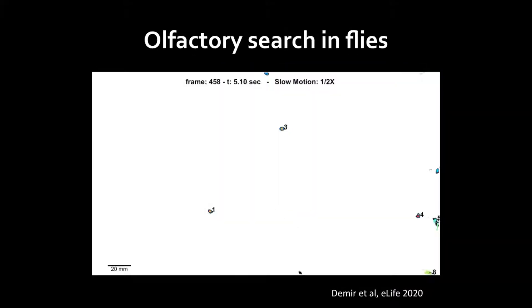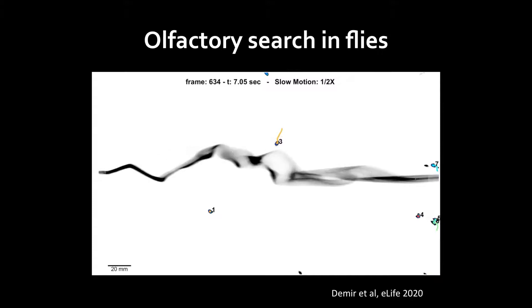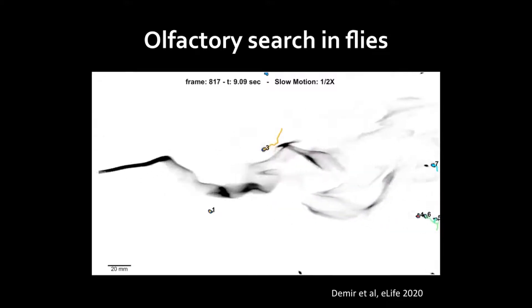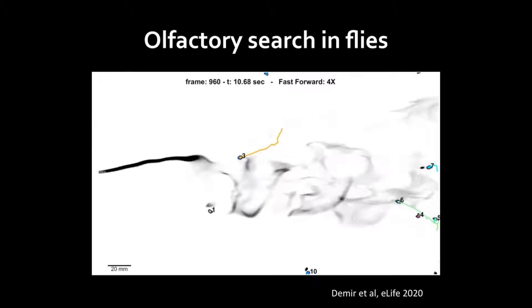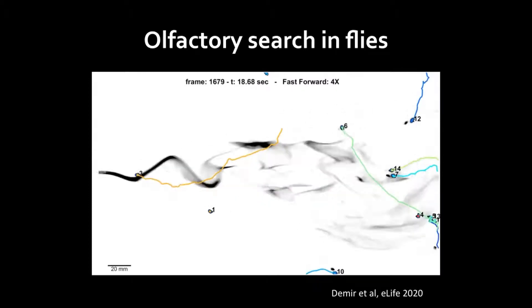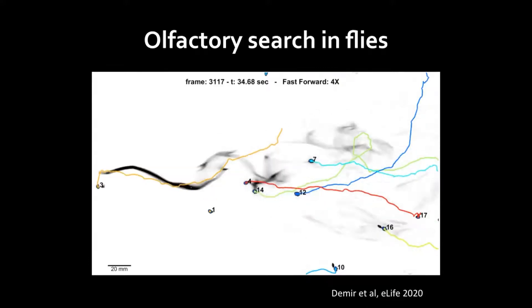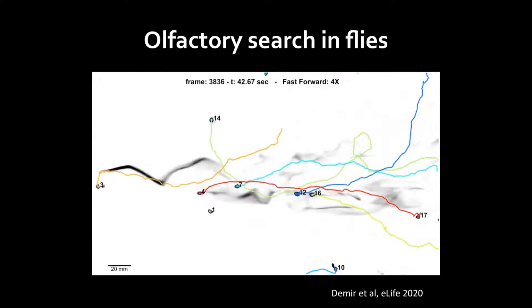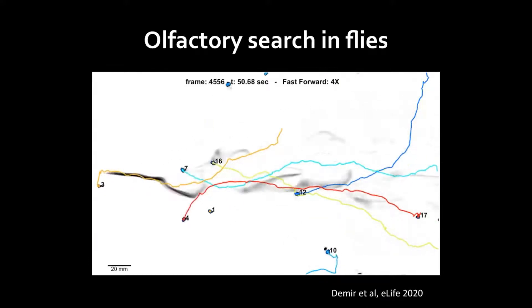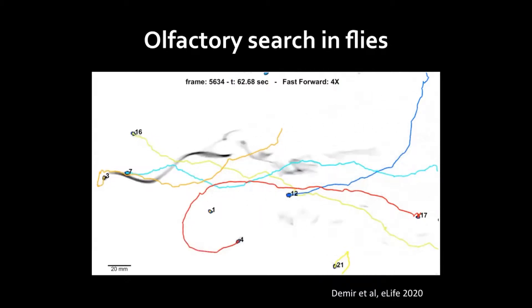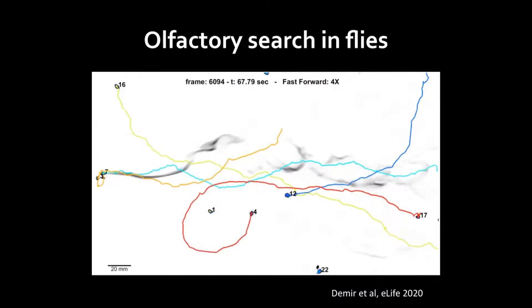As yet another example, you see here flies — working flies — that are following a scent, a track of odour. The atmosphere is not only a vehicle for momentum, that is a reservoir of energy, but also carries information through odours. And as you can see, the signal is very sparse and intermittent, but nevertheless the flies are able to find their way to the source.